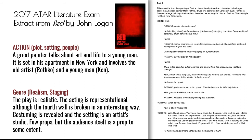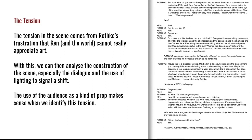When I say costume is revealed, it means there are directions about costuming specifically. There are a few props, but the audience itself is a prop to some extent. The tension in the scene comes from Rothko's frustration that Ken and the world cannot really appreciate art. With this, we can analyze the construction of the scene — especially the dialogue and use of lighting to signal a shift midway through. The use of the audience as a prop makes sense once we identify the tension: Rothko is talking about the world's lack of appreciation for art, and he's looking at the audience, talking about them too.